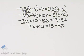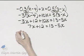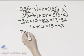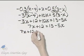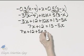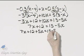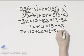I'm going to add 5x to both sides. So here's my left side, 7x plus 12, I'll add 5x. Here's my right side, and I'll add 5x.